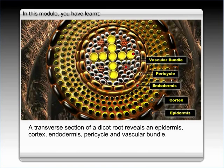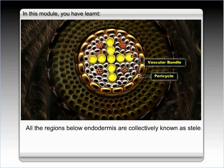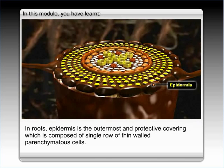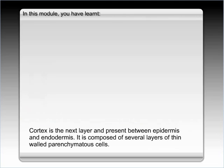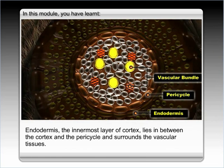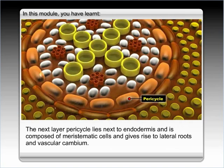In this module you have learned that a transverse section of a dicot root reveals an epidermis, cortex, endodermis, pericycle, and vascular bundle. All the regions below endodermis are collectively known as stele. The epidermis is the outermost protective covering composed of a single row of thin-walled parenchymated cells. The cortex is present between the epidermis and endodermis, composed of several layers of thin-walled parenchymated cells. The endodermis, the innermost layer of cortex, lies between the cortex and the pericycle and surrounds the vascular tissues. The pericycle lies next to the endodermis, is composed of meristematic cells, and gives rise to lateral roots and vascular cambium.